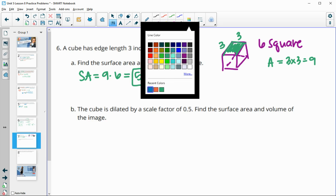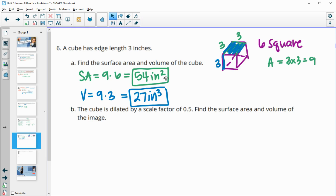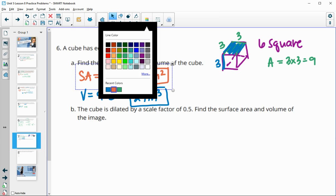Then for the volume, you do area of the base and multiply by the height. The area of the base is nine, and we multiply by the height, which is three. So our volume is going to be 27 inches cubed. Now it says the cube is dilated by a scale factor of one half.